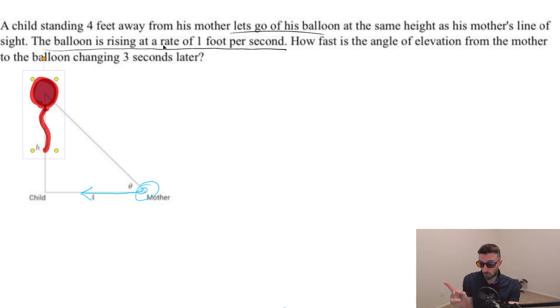Now, it's rising at the rate of one foot per second. And then they're saying, how fast is the angle of elevation from the mother to the balloon changing three seconds later? So if we went three seconds later, then that means the height of the balloon would then be three.